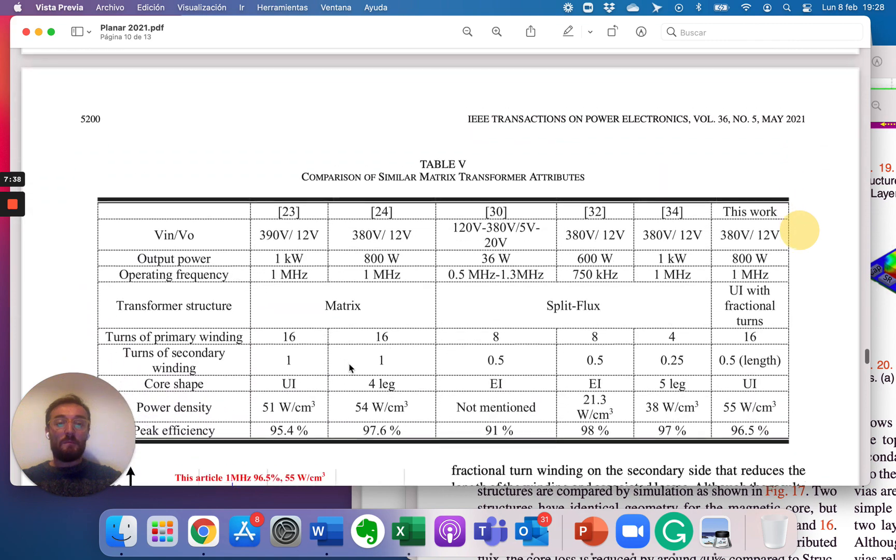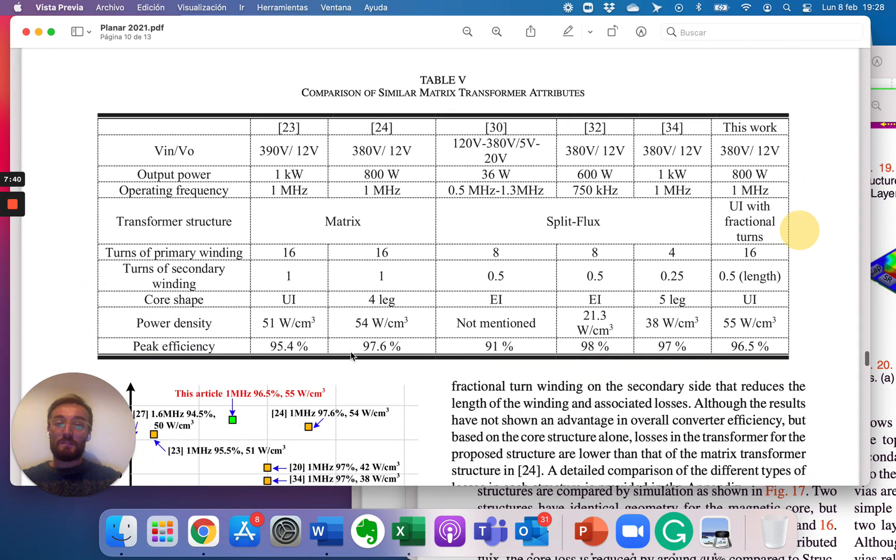And finally, they put this table. Very interesting, because here you can see the different solutions for the same, more or less same amount of power, of one kilowatt, 800 watts, of the different transformer ideas: matrix, split flux, and this is UE with fractional turns.